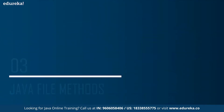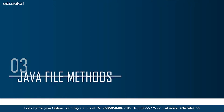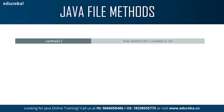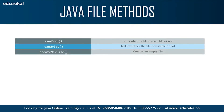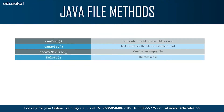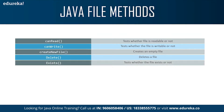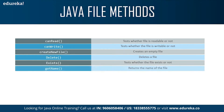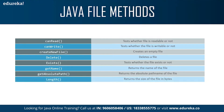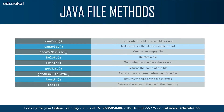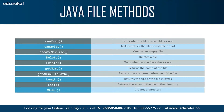Let's have a look at the various file methods that are useful to perform Java file operations. First, canRead — this method is used to test whether the file is readable or not. Next, canWrite — this method tests whether the file is writable or not. Next, createNewFile — which creates an empty file. Next, delete — this command is used to delete the file. exists — this tests whether the file exists or not. getName — used to return the name of the file. getAbsolutePath — used to return the absolute path name of the file. length — returns the size of the file in bytes. list — this method returns the array of files in the directory. And mkdir — which is used to create a directory. These methods are used to perform various file operations.